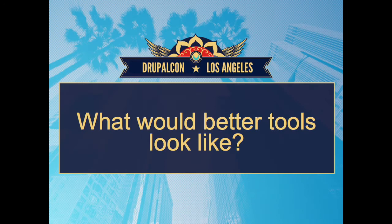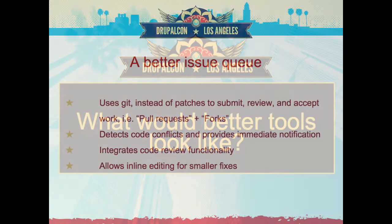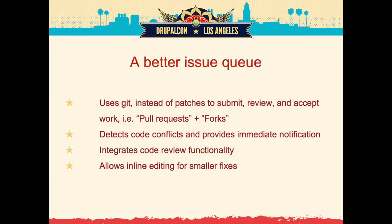So what would better tools look like? Since we're using Git, something that uses a Git-based workflow - things like pull requests that would allow less disruption. We could submit and review and accept work through pull requests, forks, similar to GitHub or other hosted services. We'd be able to do merges instead of patch re-rolling, avoiding the concept that patches are just an export out of our Git database that we use to communicate and then import back. It would allow us to detect code conflicts and provide immediate notification - letting people know when their patch gets out of date and when there are patch conflicts with other patches.